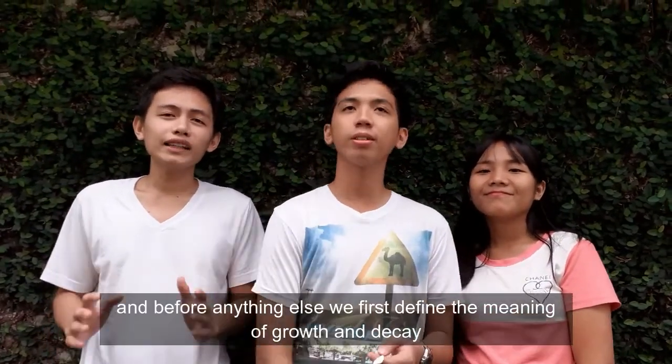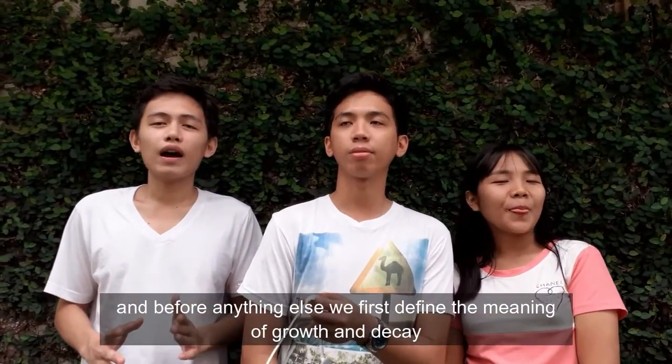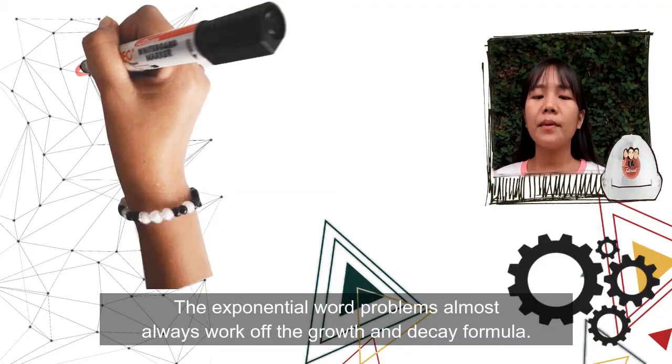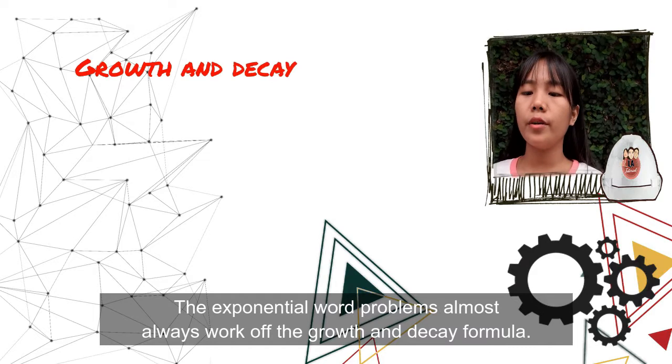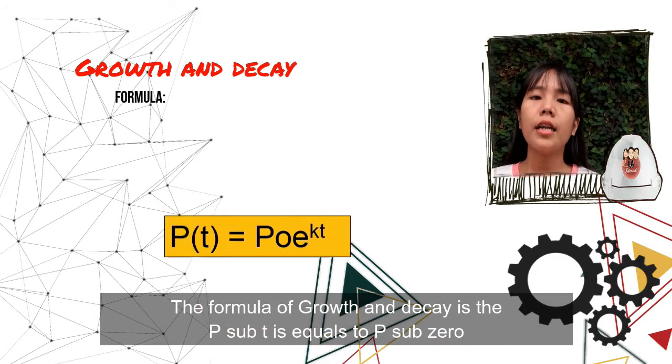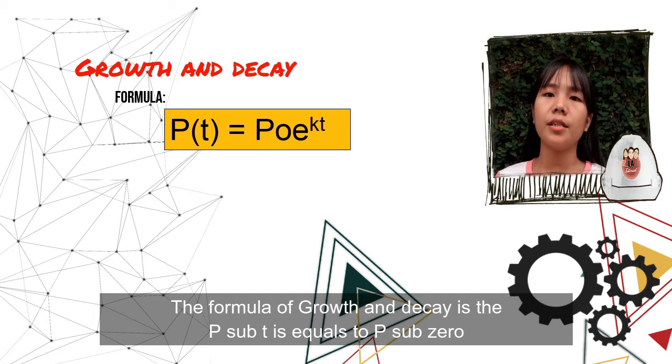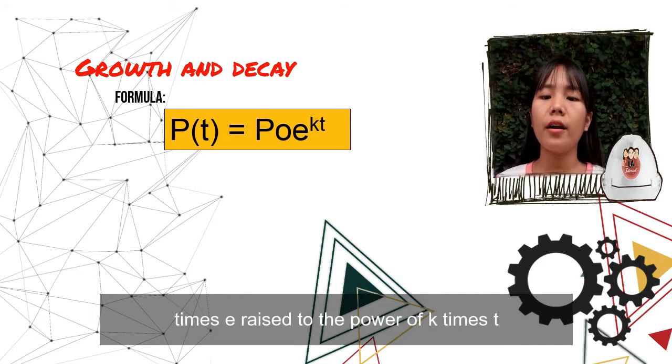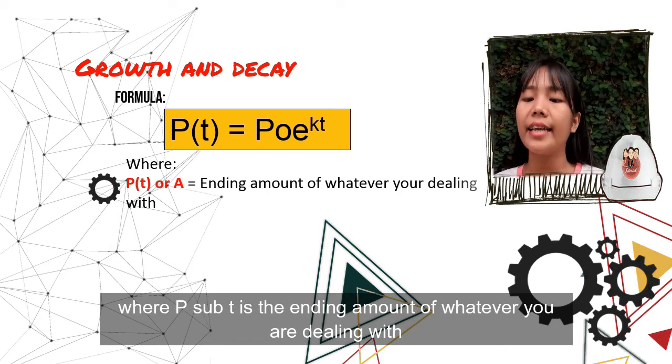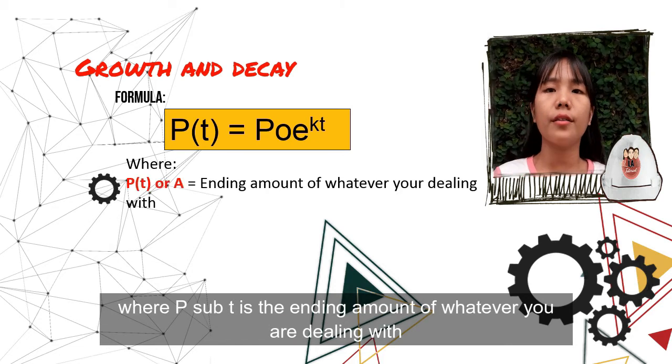Before anything else, we first define the meaning of growth and decay and its formula. The exponential word problems almost always work off the growth and decay formula. The formula of growth and decay is P(t) = P₀e^(kt) where P(t) is the ending amount of whatever you're dealing with.